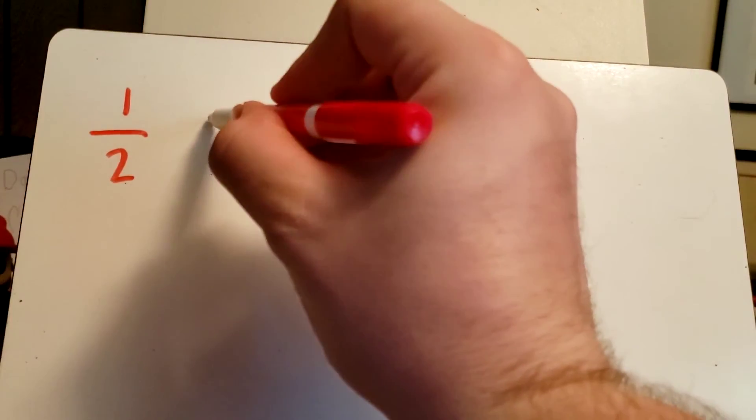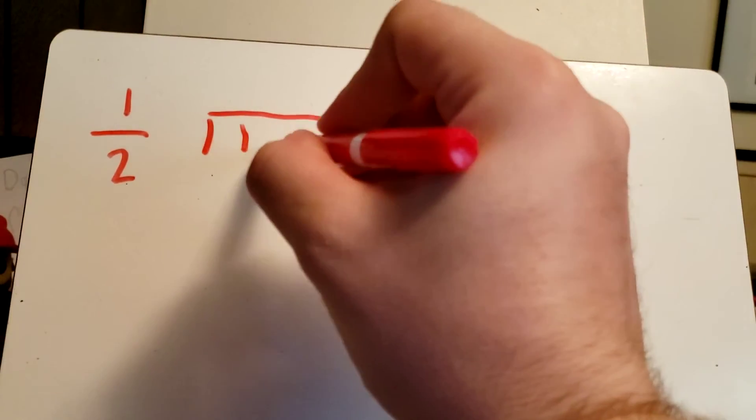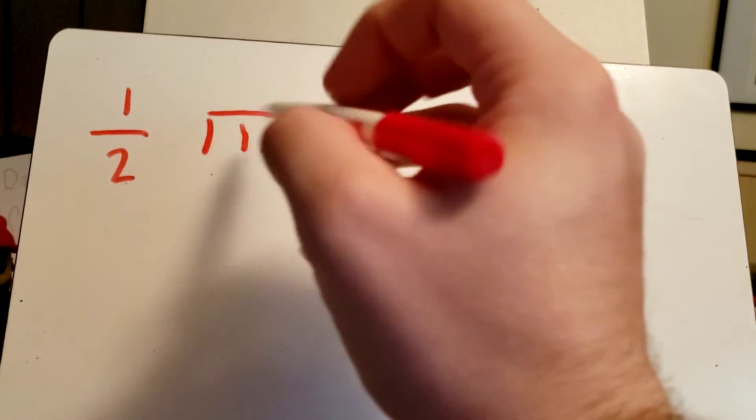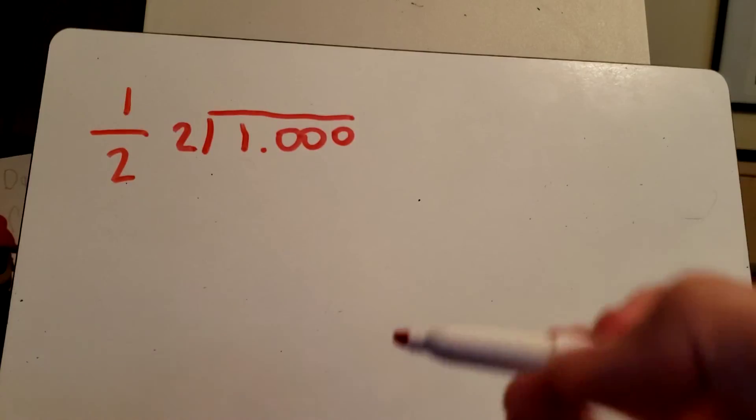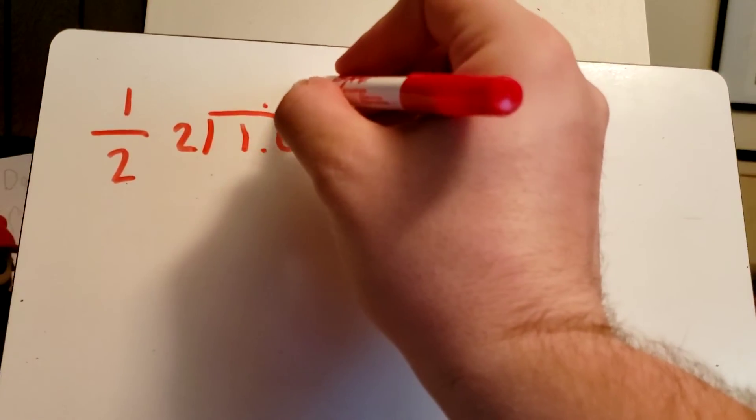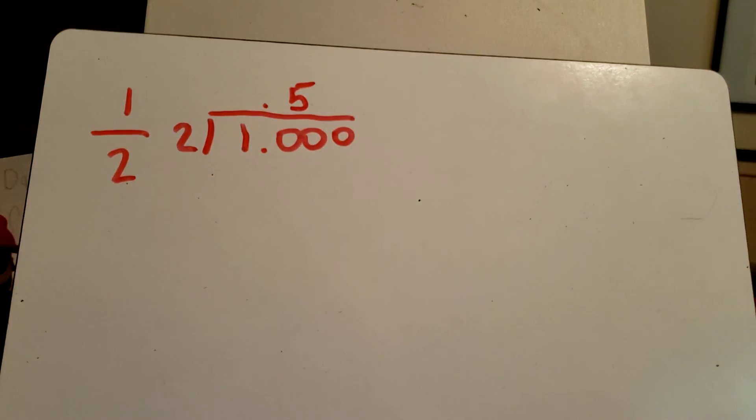Let's put one in the division symbol and let's put two on the outside. If we actually divide one by two, we would get 0.5. Now 0.5 is just the decimal version of one-half.